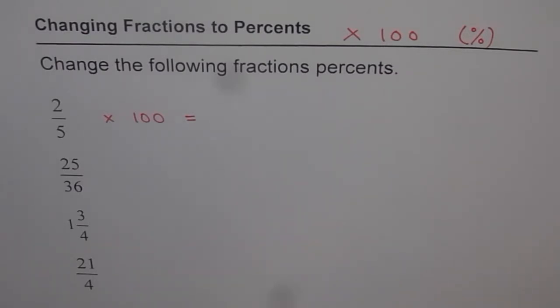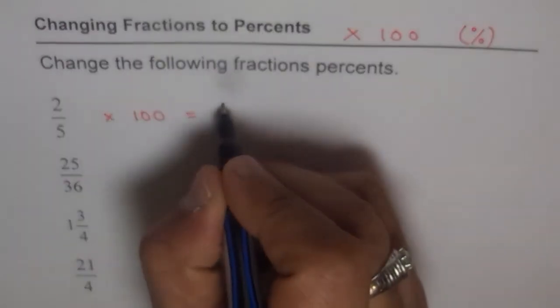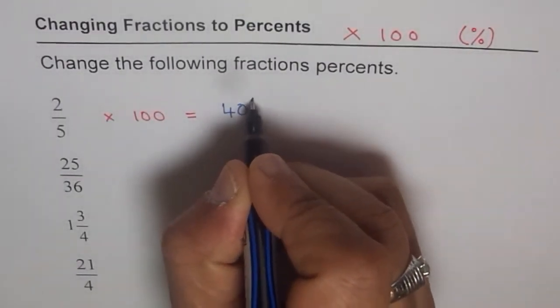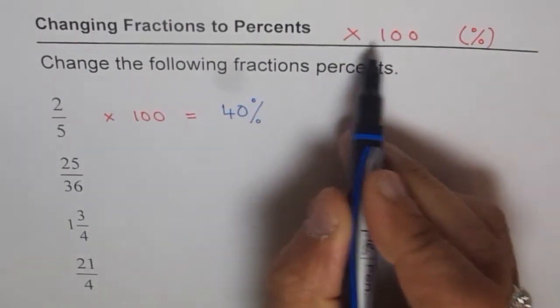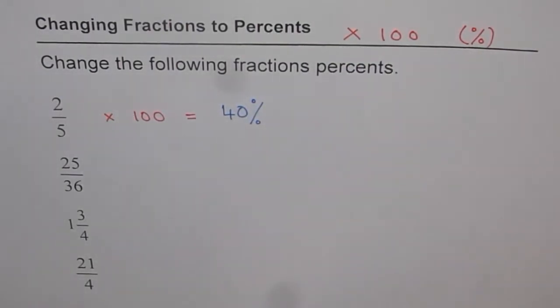So we got 2 over 5. What I will do is 2 divided by 5 times 100. And what do I get? 40. So 40 is a whole number. There is no decimal involved. We can just write 40 with a percent sign. So times 100 and write with a percent sign. That is the rule which we are going to follow.